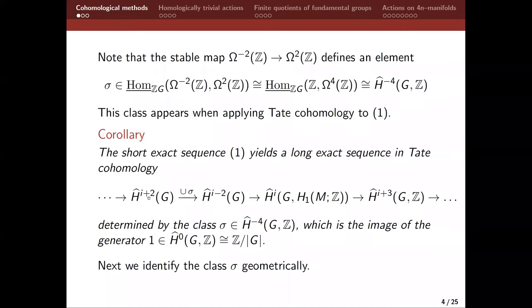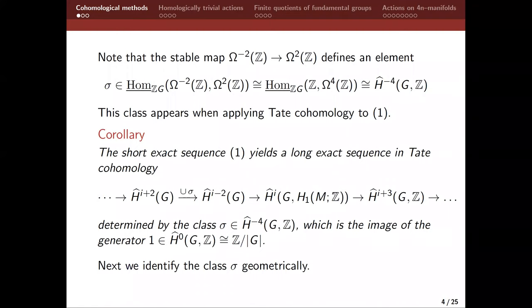By the multiplicative module structure of the sequence, what you see is that this is just a cup product by this class sigma. Two of these terms are known to us — the cohomology of the group with trivial coefficients, and the cohomology with twisted coefficients. So now let's try to understand this from the point of view of geometry. People will say, that's a lot of gobbledygook of group cohomology — we came here to see geometry, after all it is supposed to be a topology seminar. So how do we identify this class geometrically?